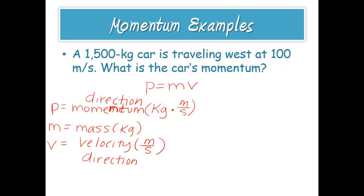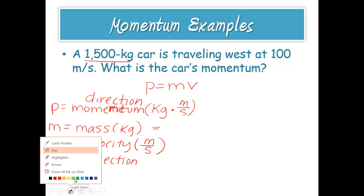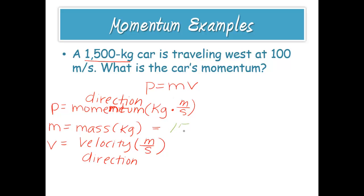All right, so let's go up here. A 1500 kilogram car is traveling west at 100 meters per second. What's the car's momentum? All right, so 1500 kilogram car. So kilograms, that means that we're talking about the mass here. Why don't we change colors? So we can kind of separate this out here a little bit. How about we switch over to maybe like a green. There we go. All right, so let's see. 1500 kilograms. So that's what it gave us.